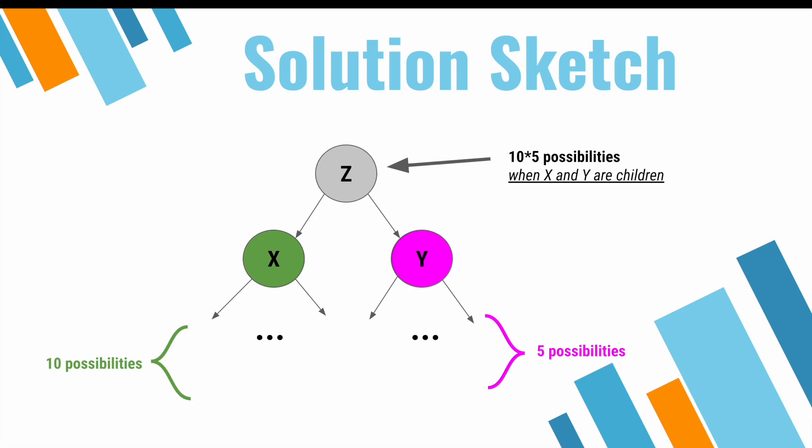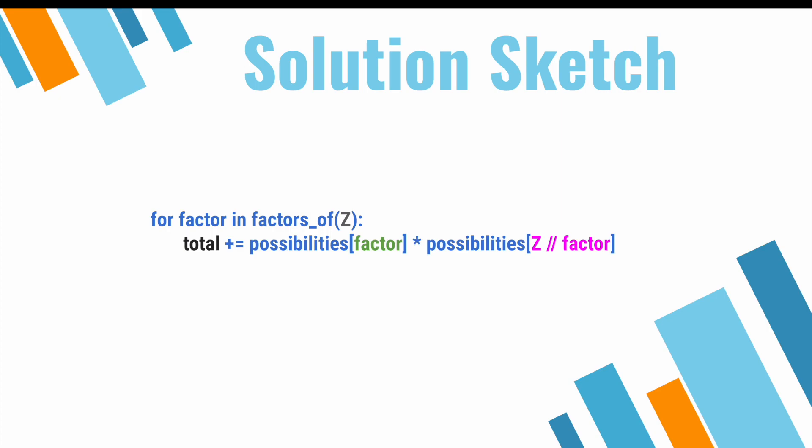So now we have the foundation to start sketching our solution. We'll say that for each factor that evenly divides z, we'll add the number of possibilities rooted at z factor, and then multiply it by z divided by factor. And this works.